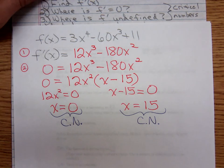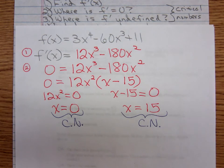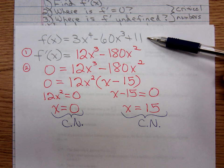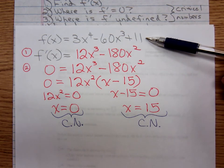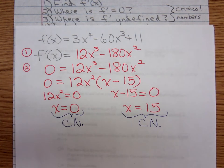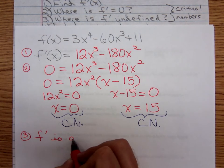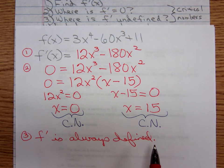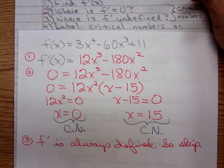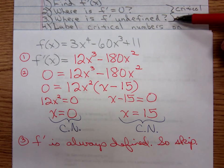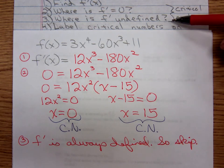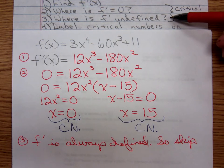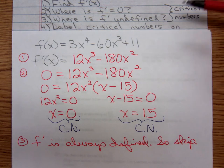Step number three: we ask ourselves where is f' undefined. This is a polynomial function — will it ever be undefined? No, it's always defined. So step three we just skip it. f' is always defined. This step applies primarily to functions that have square roots with variables underneath or variables in denominators — rational functions and square root functions. For polynomial functions, we just skip it.